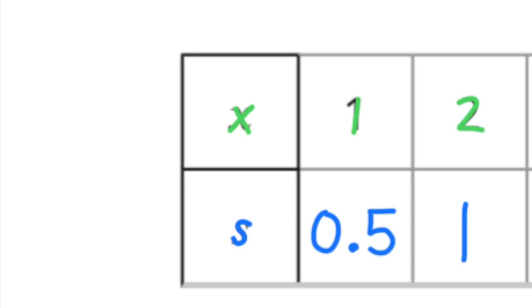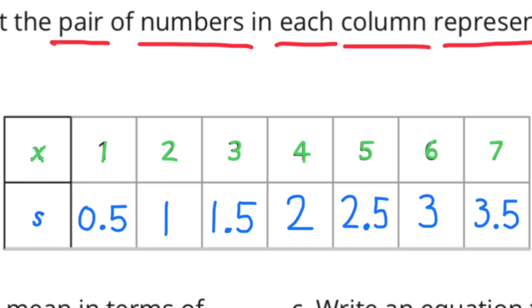The second point: the X coordinate would be 2 and the S coordinate would be 1. When the X coordinate is 1, the S coordinate is 5 tenths. When the X coordinate is 2, the S coordinate is 1. So you can see the X coordinate is increasing by 1 and the S coordinate is increasing by 5 tenths. When filling out the X coordinates, just count by 1's: 1, 2, 3, 4, 5, 6, 7.